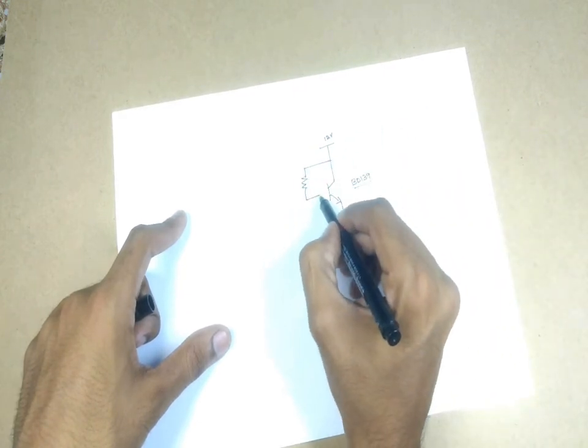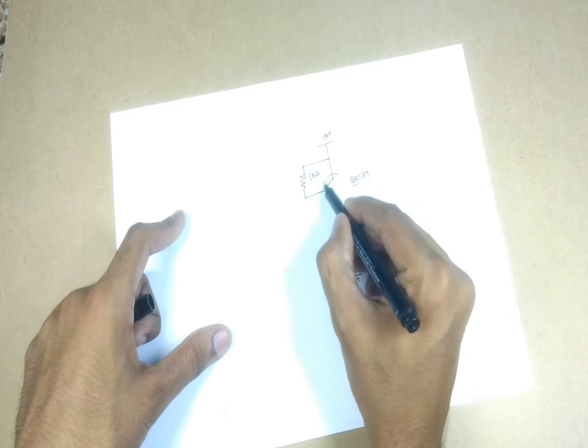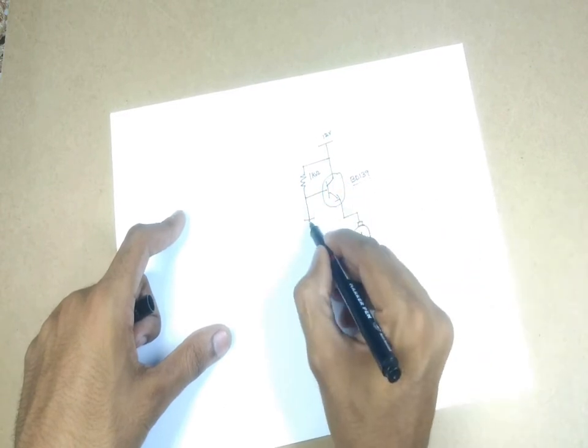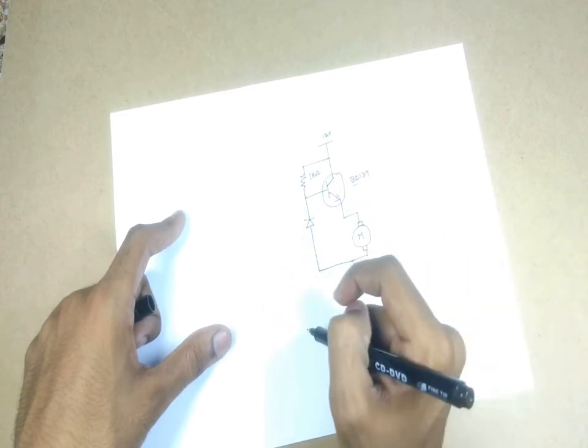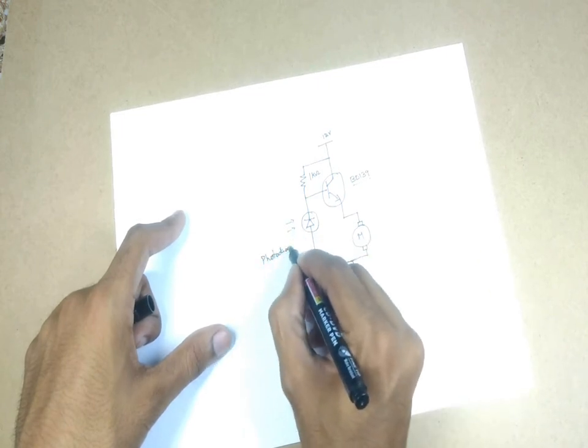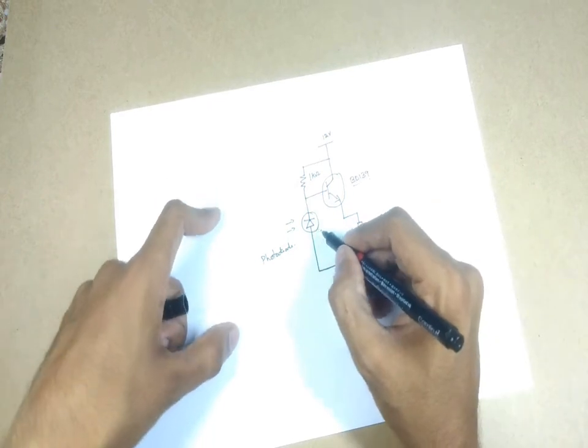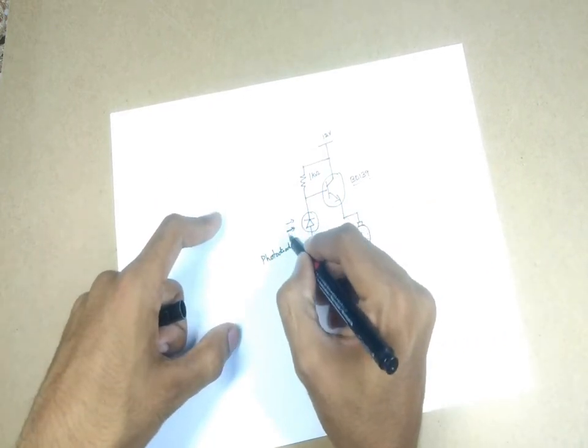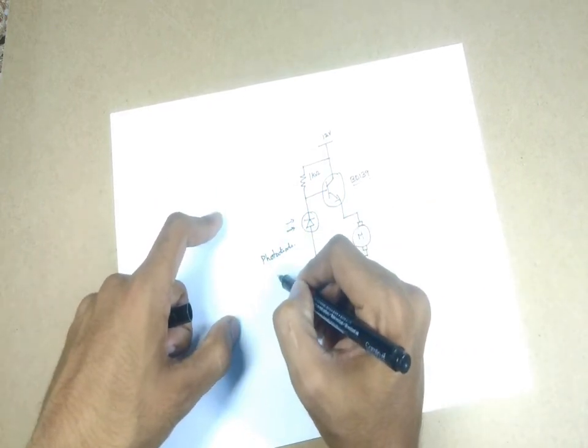We connect a 1kΩ resistor from the collector to the base of the transistor which is a biasing resistor. We connect the photodiode, which is an IR photodiode, at the base of the transistor in reverse bias. The difference between a photodiode and LDR is LDR works with light while the photodiode works only with the IR rays from the sun.